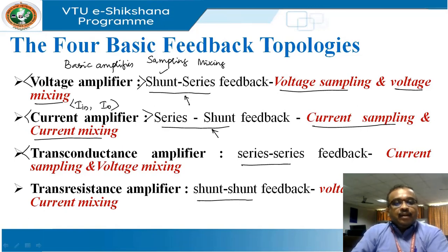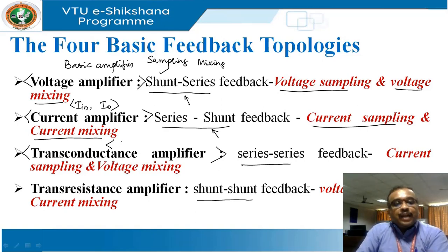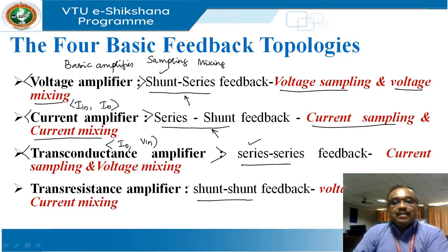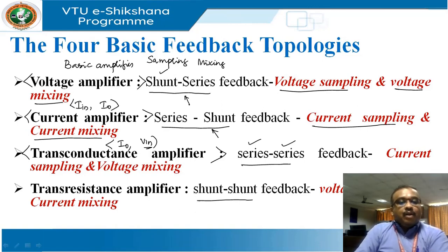The third kind of amplifier is the trans-conductance amplifier, which uses series-series feedback. We are sampling the current value at the output, so it is series. We are mixing the voltage value at the input, which is also series. Hence the name series-series. Lastly, we have the trans-resistance amplifier with shunt-shunt feedback.